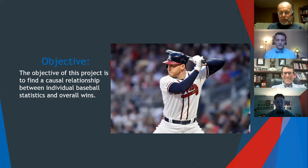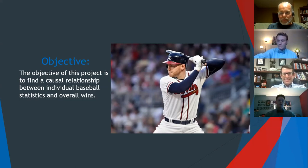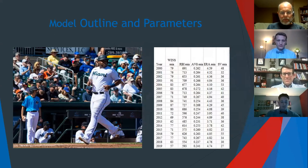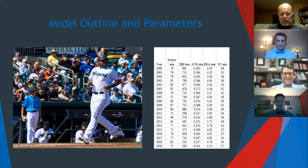The basic aim of econometrics is to confront theoretical economics with real data. The objective of this study is to use econometric modeling to find a causal relationship between individual baseball statistics and overall wins, and use those findings to predict the winner of the National League East. I used an ordinary least squares model, which tries to minimize the difference between sample and estimated data points.